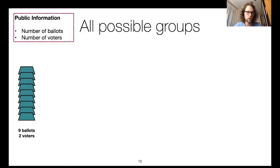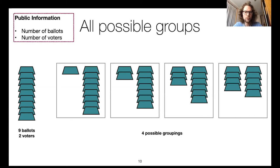Suppose we have nine ballots produced by two voters — both values are public. These nine ballots can be grouped among the two voters in different ways, resulting in different groupings at the end of the filtering phase — namely four possible groupings where the smallest group has one, two, three, or four ballots. What we need to do to make the dummy ballot trick work is insert extra dummies so that the resulting groups form a super cover of each of these four situations. The only group sizes that appear are one through eight, so a possible super cover would include groups of all those sizes.